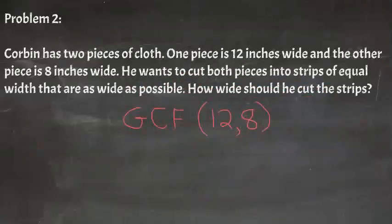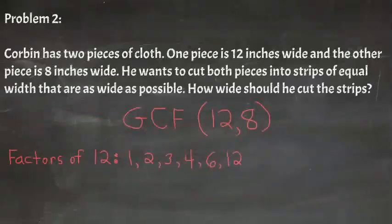Let's list the factors of 12. We get 1, 2, 3, 4, 6, and 12. The factors of 8 are 1, 2, 4, and 8. The largest number they have in common is 4. So our answer is 4 inches.